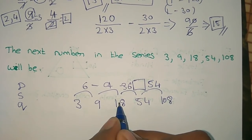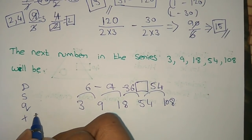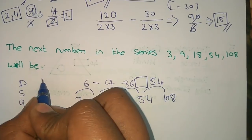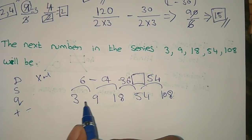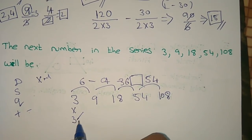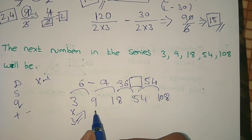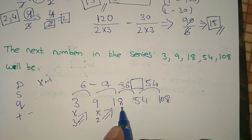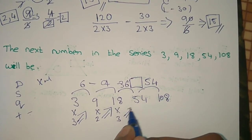Here: 3, 9, 18. Addition doesn't work, so we look at multiplication. 3 × 3 = 9. Then 9 × 2 = 18. Then 18 × 3 = 54. Then 54 × 2 = 108. So the pattern alternates: multiply by 3, then multiply by 2.